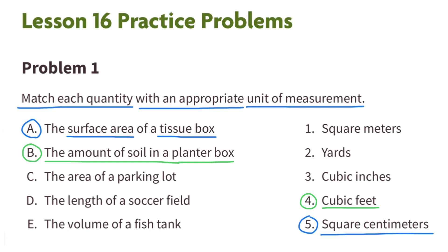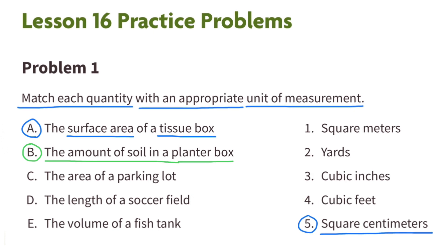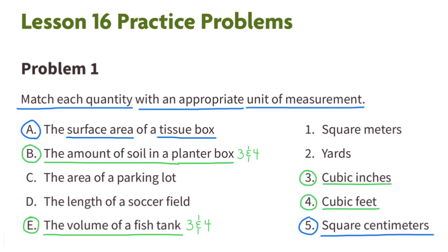B: the amount of soil in a planter box. Since they're referring to the amount of soil that would fit inside a planter box, I need to look for a cubic measurement — either cubic inches or cubic feet. Since I don't know the size of the planter box, I don't know if I should select cubic feet or cubic inches. I noticed E: the volume of a fish tank also has an unknown size, so a planter box and a fish tank can both be large or small.